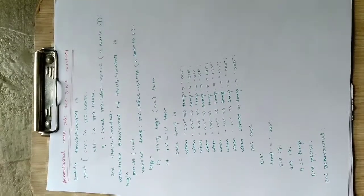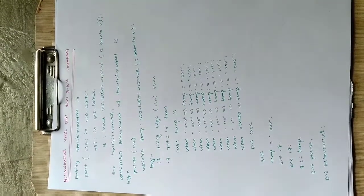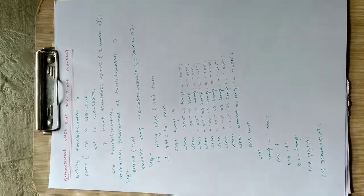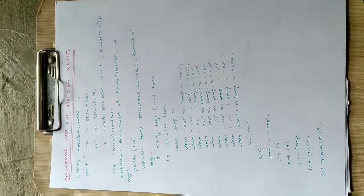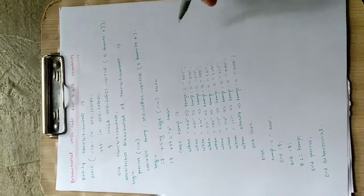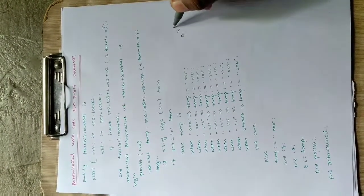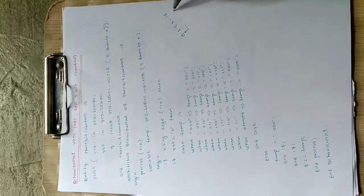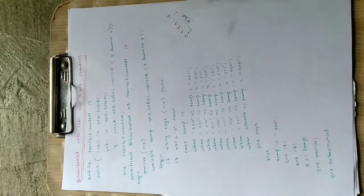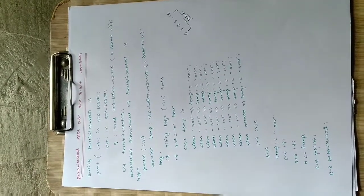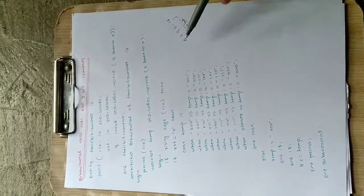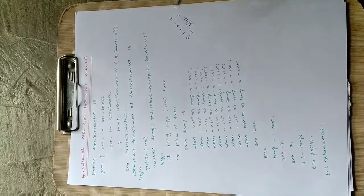In this video we are going to talk about behavioral VHDL code for a 3-bit counter. First, let's understand what a counter is — a counter is something which counts. For example, 0, 1, 2, 3, up to 10. If it is counting from 1 to 10, then it is called a 10-bit counter. Depending on the number of bits, it will be counting accordingly.